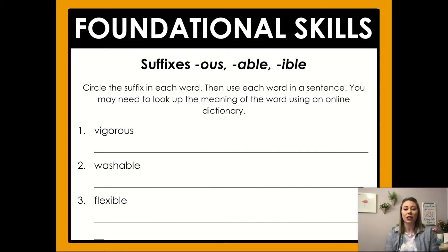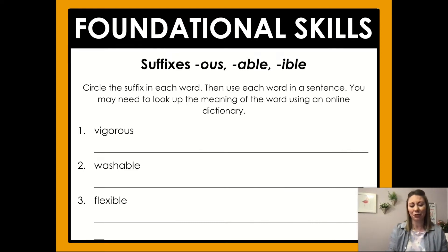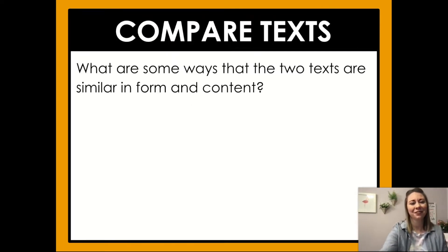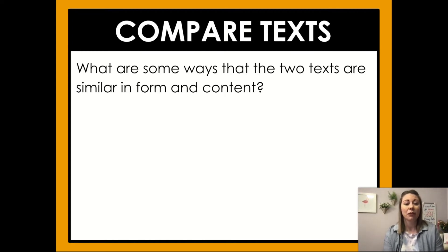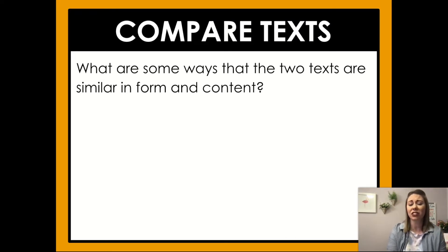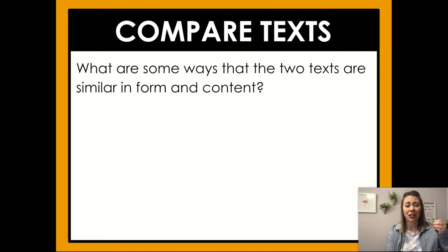You might need to look words up using an online dictionary. Remember how you can go to Google and type the word, like vigorous, then the word definition. Google will tell you what the word means. Now, we are comparing texts today. As I show you some pages from our last two stories, think about what are some ways the two texts are similar in form and content. Form is like how they are presenting the information, and content is what they're talking about.